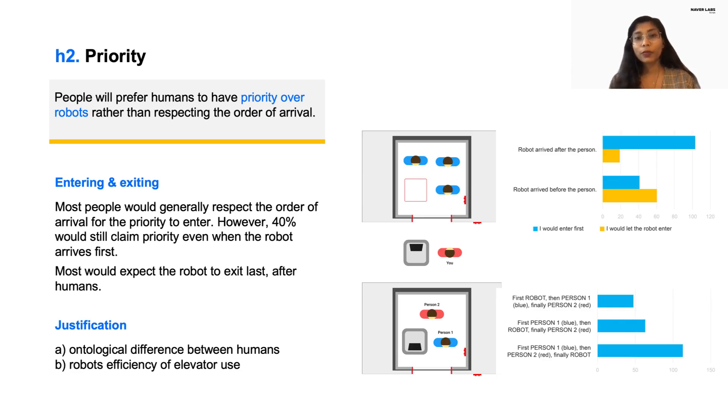To understand what people perceive as the correct order of service in this context, we asked questions regarding the participant's willingness to let the robot enter or exit first in different orders of arrival. We found that most people would generally respect the order of arrival to define the priority to enter the elevator. This does not support our second hypothesis, but interestingly, 40% would still claim priority over the robot, even when the robot arrives first.